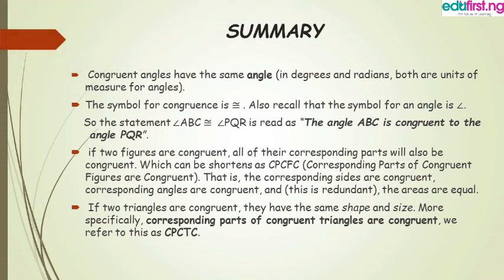In summary, we established that congruent angles have the same measure, whether in degrees or radians. We learned the congruency symbol — it is not 'equal to' and not 'equivalence to.' If you want to state that one triangle is congruent to another, use the congruency symbol. We also established that if two triangles are congruent, they have the same shape and size, and the corresponding parts of congruent triangles are congruent — CPCTC. In our next class, we will expand on congruent angles with more detailed examples.